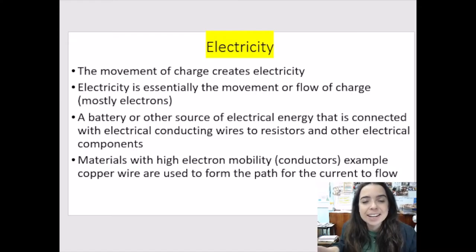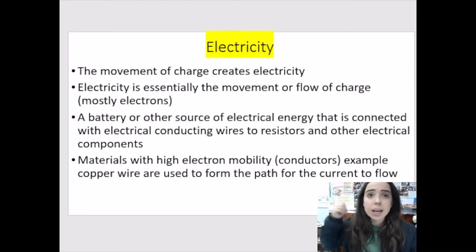The first thing that you need to understand is that the movement of charge, the movement of electrons creates electricity. And that's why we say that electricity is basically the flow of charge, the flow of electrons. Now, where do the electrons come from? They come from our conducting material that we use.